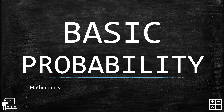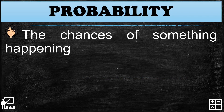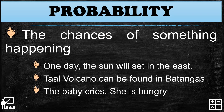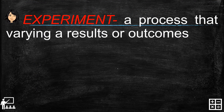This video lesson is about basic probability. In this lesson I will show you the basic information about probability. Probability is the chances of something happening — a chance that one day the Sun will set in the east, or a chance that a baby cries because she is hungry. Probability can be done through an experiment. An experiment is a process that varies a result or outcomes.